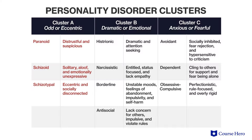Cluster A personality disorders involve odd or eccentric traits such as social withdrawal, lack of emotional expression, and distorted thinking. The first disorder in this cluster is paranoid personality disorder. People with this disorder are distrustful and suspicious of others. They are sensitive to perceived insults or attacks on their self-image and fear humiliation.